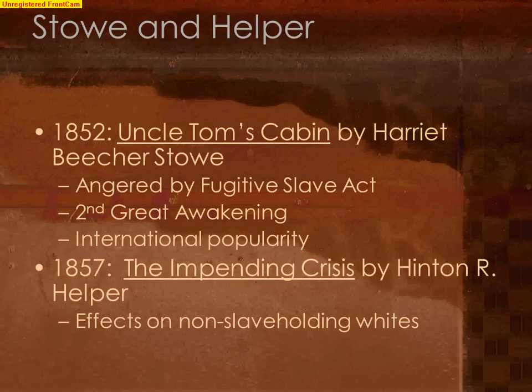In 1857, a white Southerner from North Carolina, Hinton R. Helper, published The Impending Crisis of the South. This book was against slavery, but for different reasons — he was against it because of the effect it had on the non-slave-owning whites in the South, those poor white people who could not afford to own any slaves. His book was burned and banned in many parts of the South, and both books only increased the anger between the North and the South.